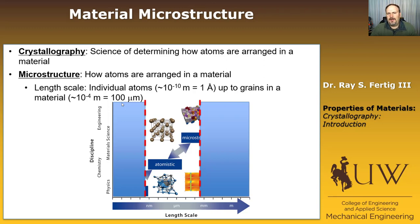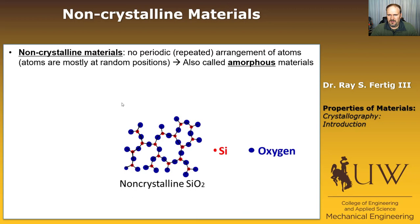Now, as we talk about microstructure and how atoms are arranged in a material, there are two broad categories that we typically classify materials into. And the first one is non-crystalline. So a non-crystalline material has no periodic, or I'm going to use periodic to mean repeated, arrangement of atoms. So basically, the atoms are in some sort of random position. I'm also going to frequently call this kind of material amorphous. So non-crystalline and amorphous are synonymous.